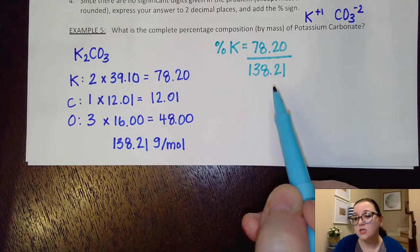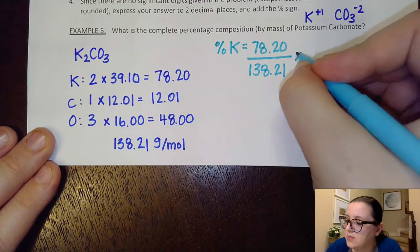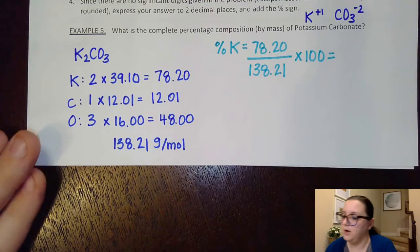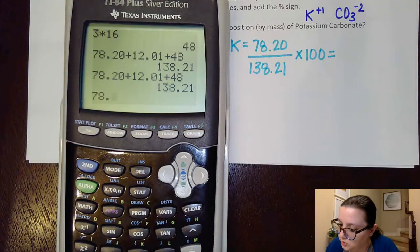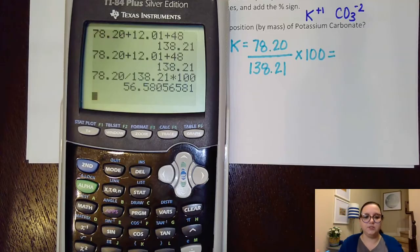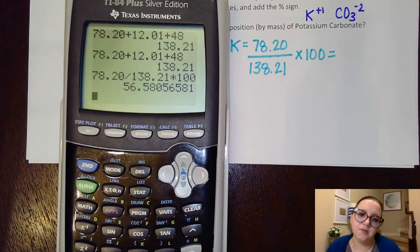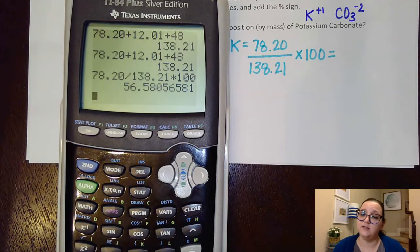This would get us a fraction. Of course, we want a percentage. So I'm going to take this and multiply it by 100. All right, so I'm going to do my 78.20 over 138.21 times 100. Now, obviously, this is going to get you quite a few digits here, and I don't want to have to report all these digits. The problem is, is that this particular question didn't really have any kind of starting number to it.